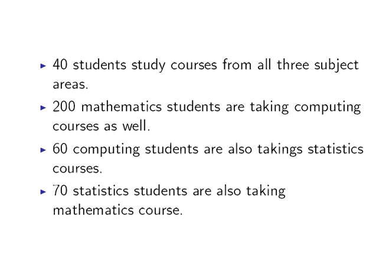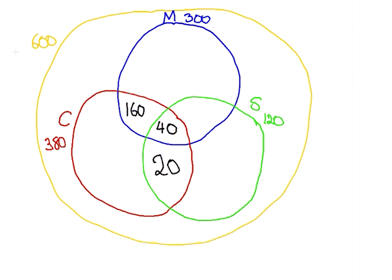70 Statistics students are also taking Mathematics courses. We have already counted 40 of those students who are additionally taking Computing subjects. So that leaves 30 who are studying both Maths and Statistics but not Computer Science.